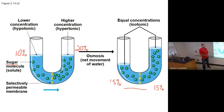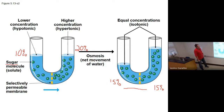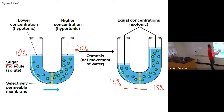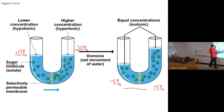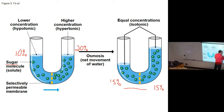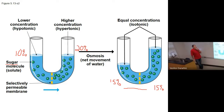Does all that make sense? There are going to be test questions like this — at least one. It won't be about a U-shaped tube; it'll be about balloons and solutions, and they are on the study guide. The idea is that water wants to move toward where the solute is really concentrated. We have words for that: hypotonic means less concentration, hypertonic means higher concentration, and isotonic means the same concentration.